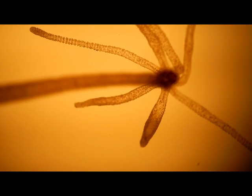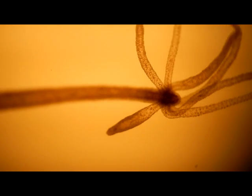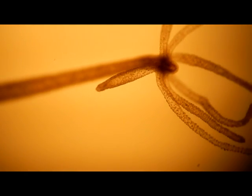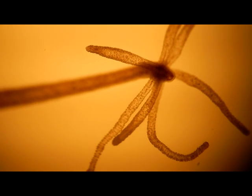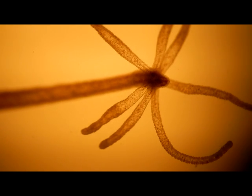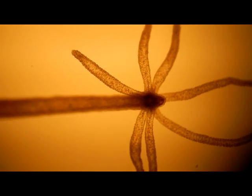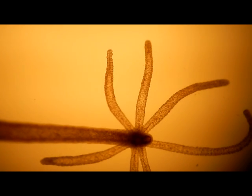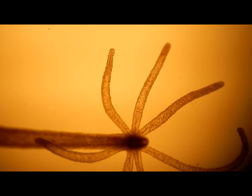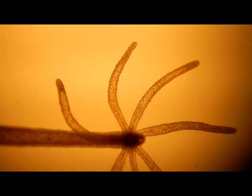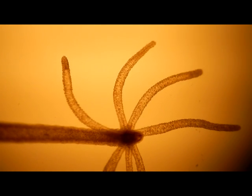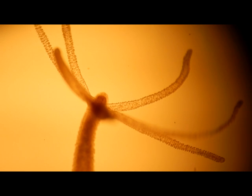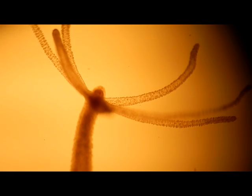These not only contact prey, they contain the stinging cnidocytes, or nematocytes, which can discharge nematocysts to help subdue their prey. The tentacles bring the food item, very often a small arthropod, into the mouth, and the entire body can distend in order to fit a large prey item.